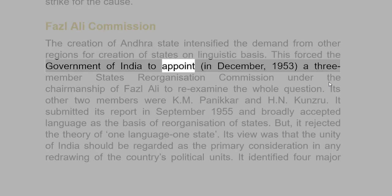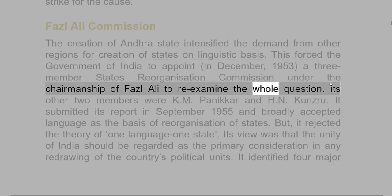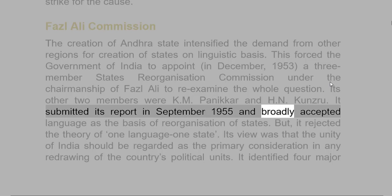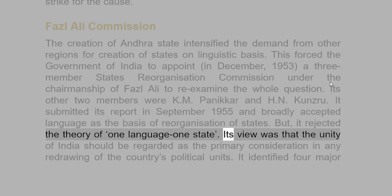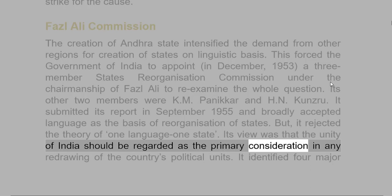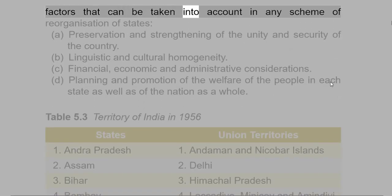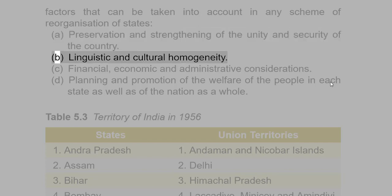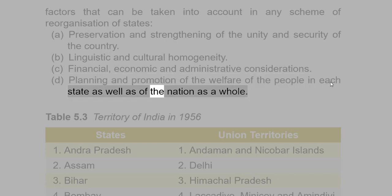This forced the Government of India to appoint, in December 1953, a three-member States Reorganization Commission under the chairmanship of Fazl Ali to re-examine the whole question. Its other two members were K.M. Panikkar and H.N. Kunzru. It submitted its report in September 1955 and broadly accepted language as the basis of reorganization of states. But it rejected the theory of 'one language, one state.' Its view was that the unity of India should be the primary consideration in any redrawing of the country's political units. It identified four major factors: (A) Preservation and strengthening of unity and security; (B) Linguistic and cultural homogeneity; (C) Financial, economic and administrative considerations; (D) Planning and promotion of welfare of the people in each state and the nation as a whole.